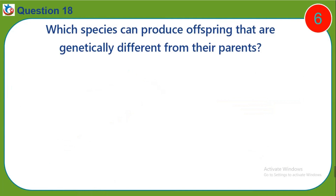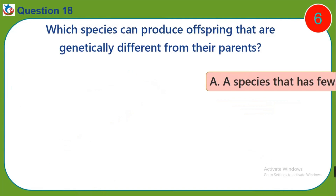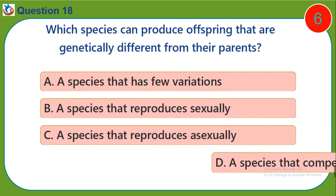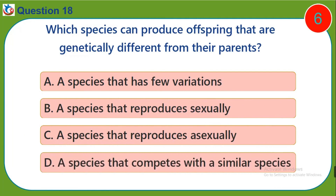Question eighteen: Which species can produce offspring that are genetically different from their parents? a) a species that has few variations, b) a species that reproduces sexually, c) a species that reproduces asexually, d) a species that competes with a similar species.